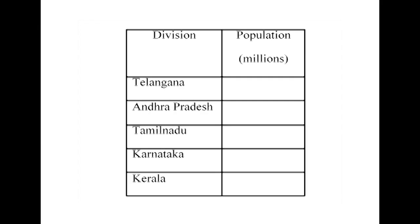Example of a one-way table: there are two columns — division and population in millions. The divisions include Telangana, Andhra Pradesh, Tamil Nadu, Karnataka, and Kerala. This table gives information regarding one characteristic — the population in different divisions. All questions answered in a one-way table are independent of each other, making it an example of simple tabulation, since the information is regarding one independent question: the number of persons in various divisions in millions.